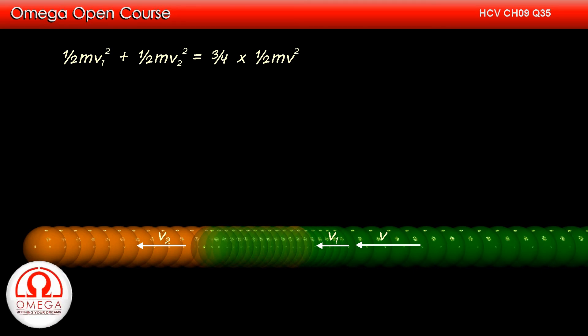Thus, half MV1 square plus half MV2 square is equal to 3 by 4 into half MV square. Dividing both sides by half M, we get V1 square plus V2 square is equal to 3 by 4V square.